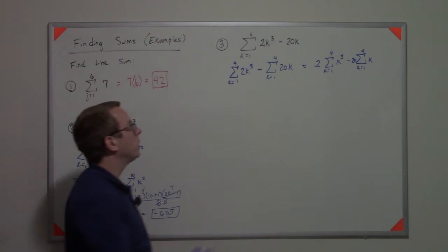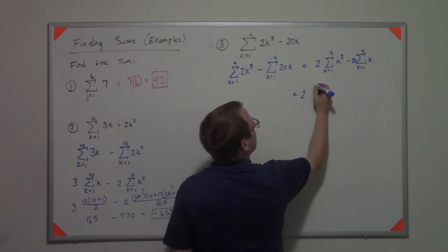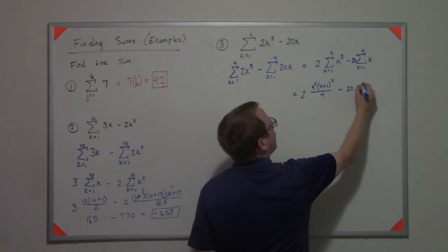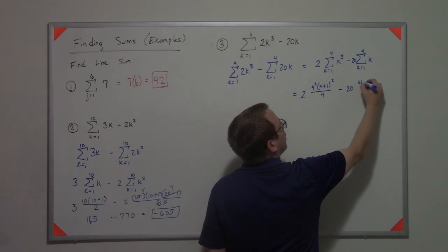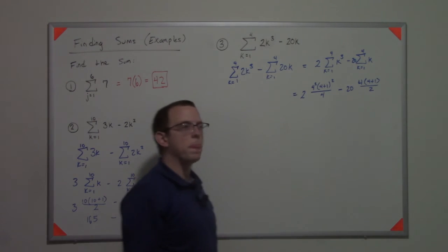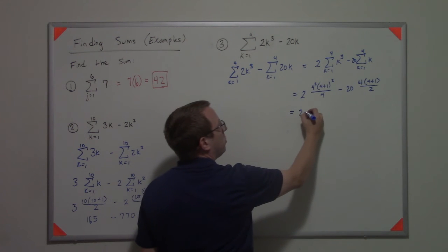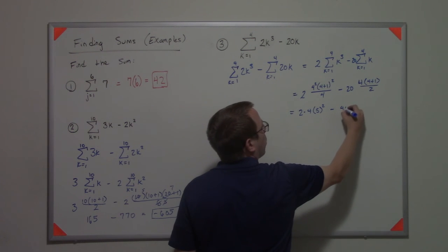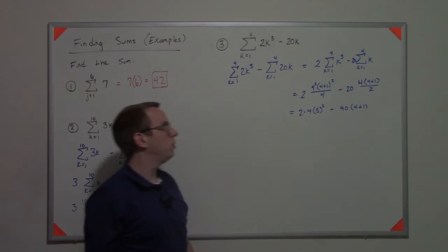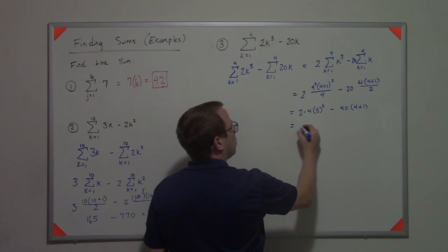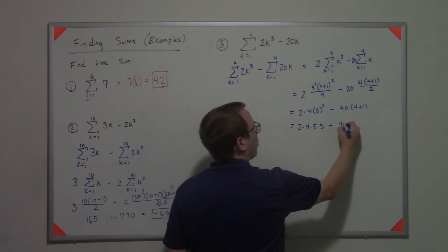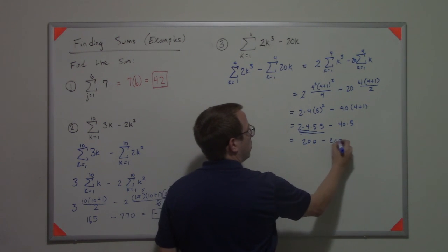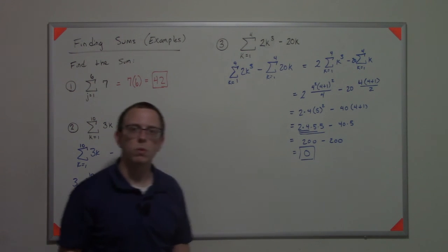So then we can use the formula that says that's n squared, n plus 1 squared over 4, minus 20, n times n plus 1 over 2. So 4's cancel. So that's 2 times 4 times 5 squared. So 2's cancel. So that's 40 plus 1, right, because that's 80 over 2. So it's 40, 40 times 4 plus 1. So 2 times 4 times 5 times 5 minus 40 times 5. So 8, 40, 200 equals 0.